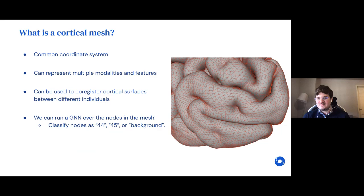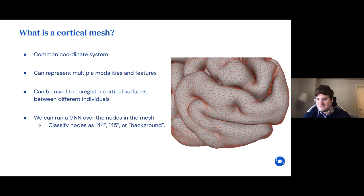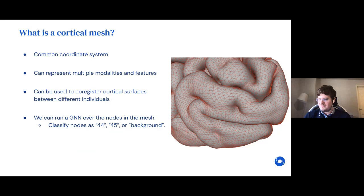Interestingly, we didn't start this work with the intent of writing a GNN paper — we were interested in finding better ways to process the brain mesh. In cortical mesh segmentation we partition the brain surface into triangulations; this 3D mesh gives a common coordinate system where at every point we can represent various modalities — typically features from an fMRI scan. Once we have this triangulated mesh we can treat it as a graph and run a graph neural network over the nodes, classifying every node as belonging to functional region 44, functional region 45, or background.